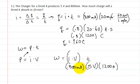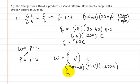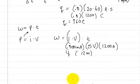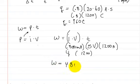Multiplying these out: 0.8 times 5 gives you 4, then times 1,200, so that gives you 4,800. The total energy is equal to 4,800 joules — that's how much energy is going to be absorbed by that Droid battery.